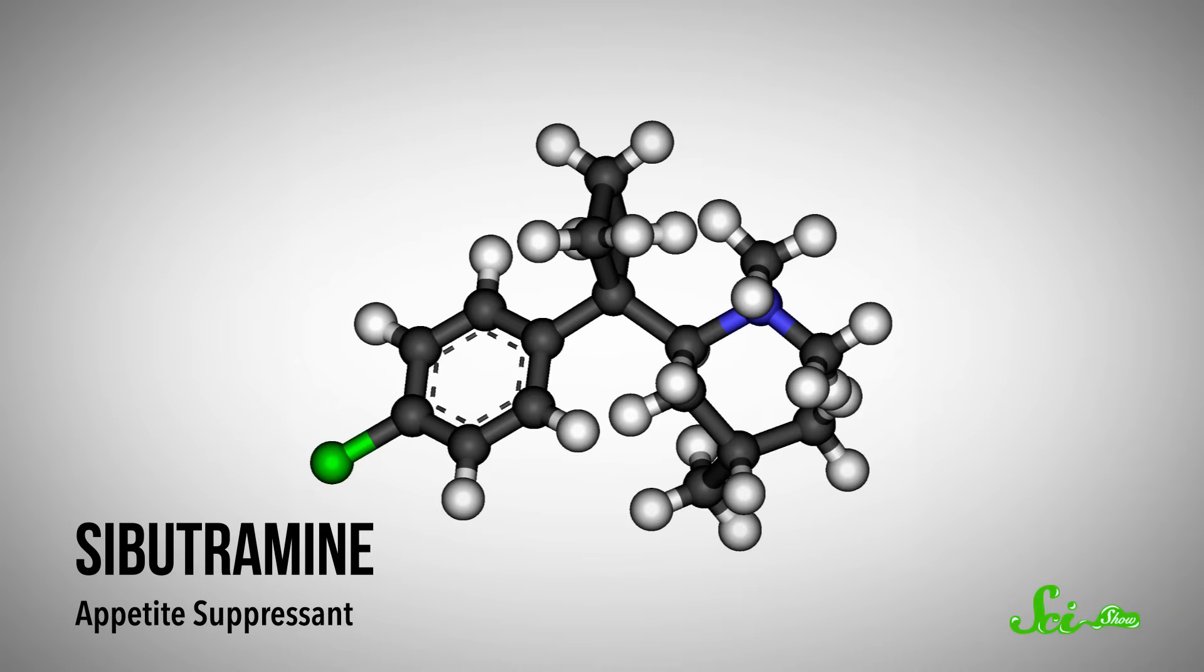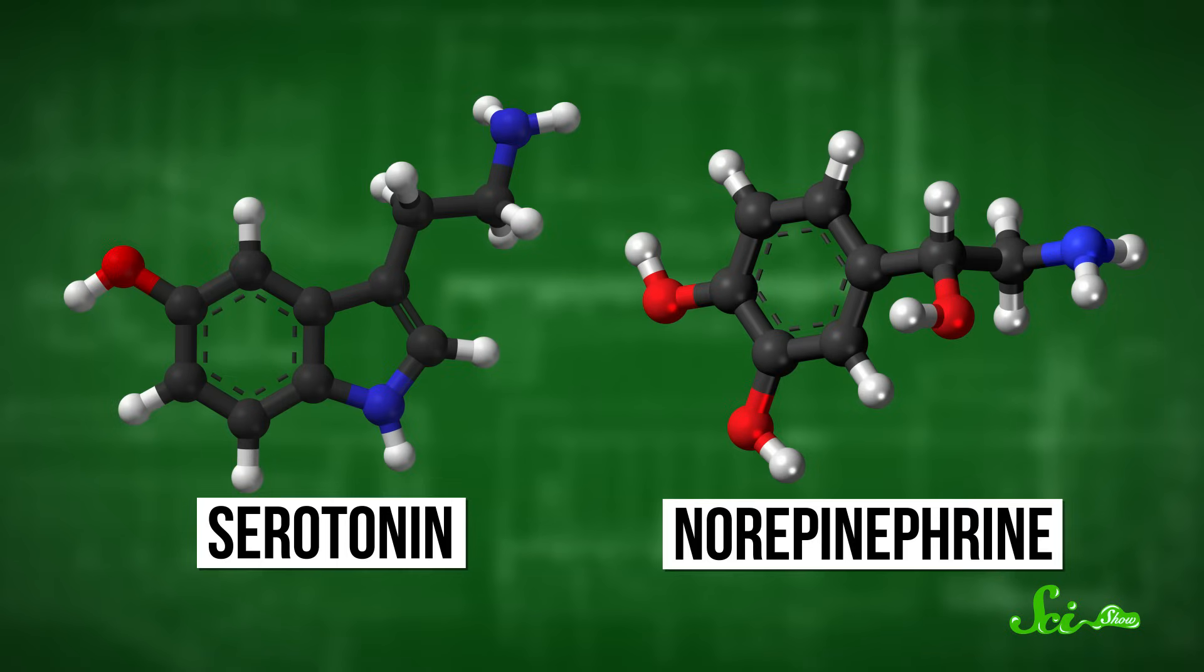Appetite suppressants work by blocking your body's ability to reabsorb the chemical signals that your brain uses, called neurotransmitters, to regulate hunger. You've probably heard of a couple of these neurotransmitters: serotonin and norepinephrine. They're released by your hypothalamus to make you feel full. So if a chemical can block your body's ability to reabsorb those chemicals, you would feel more full and eat less. Do they work? Well, sort of, and only for a while.